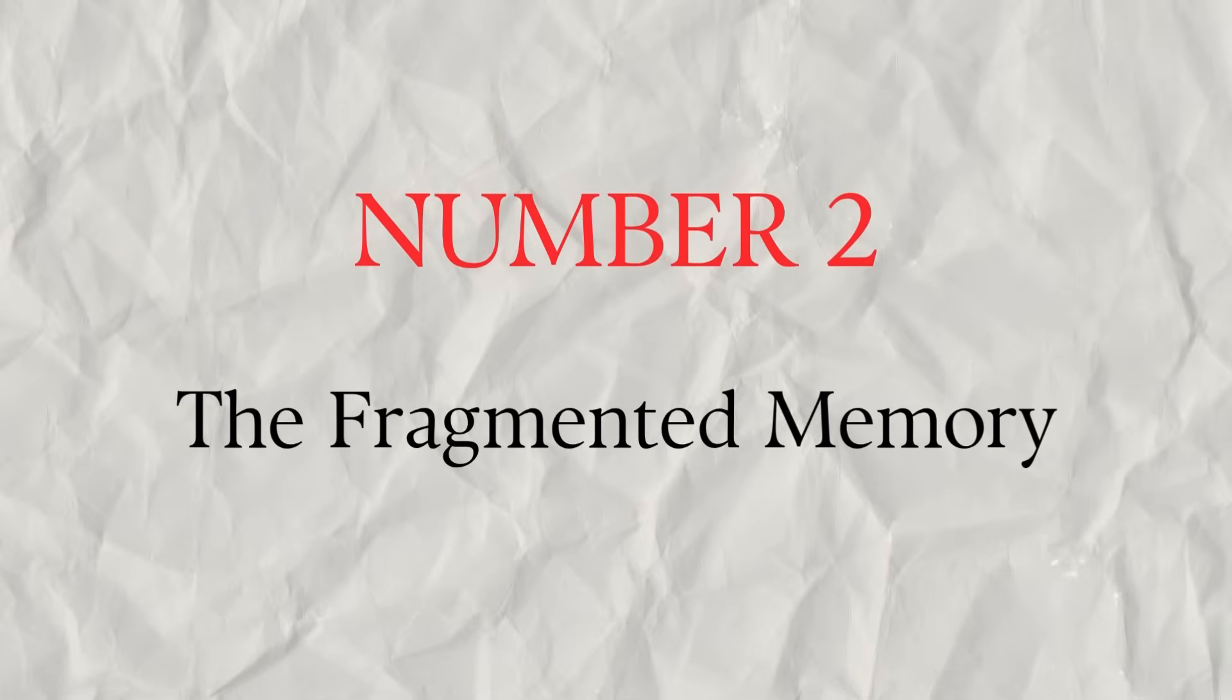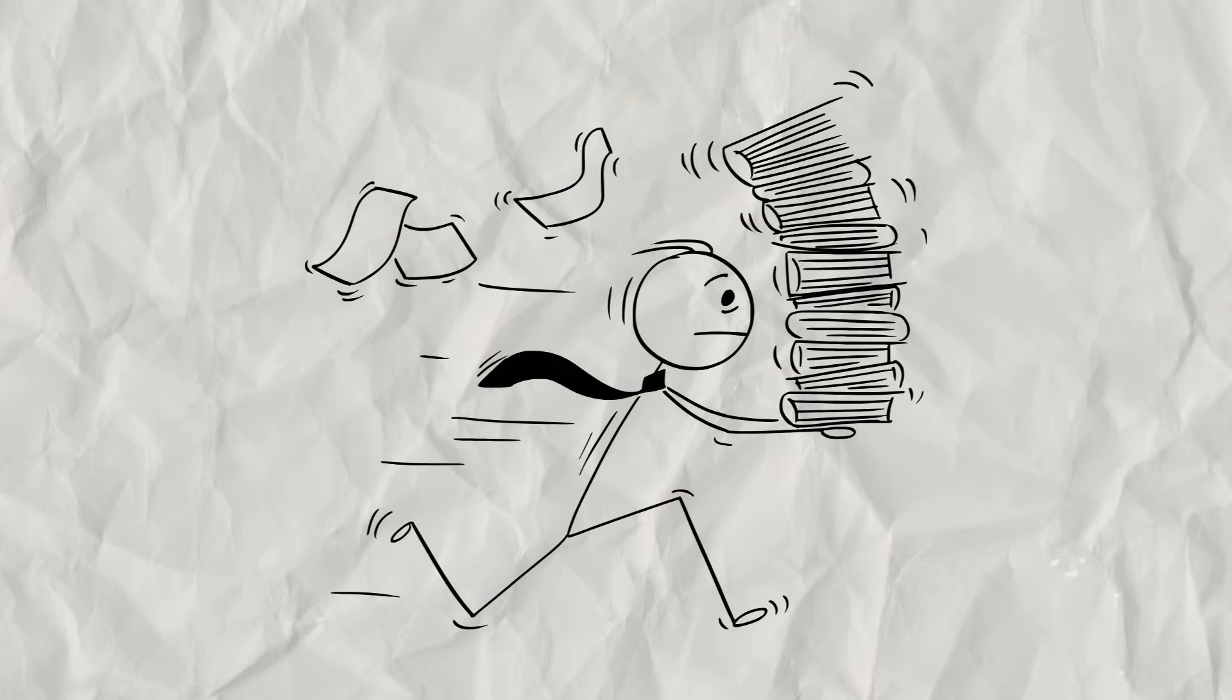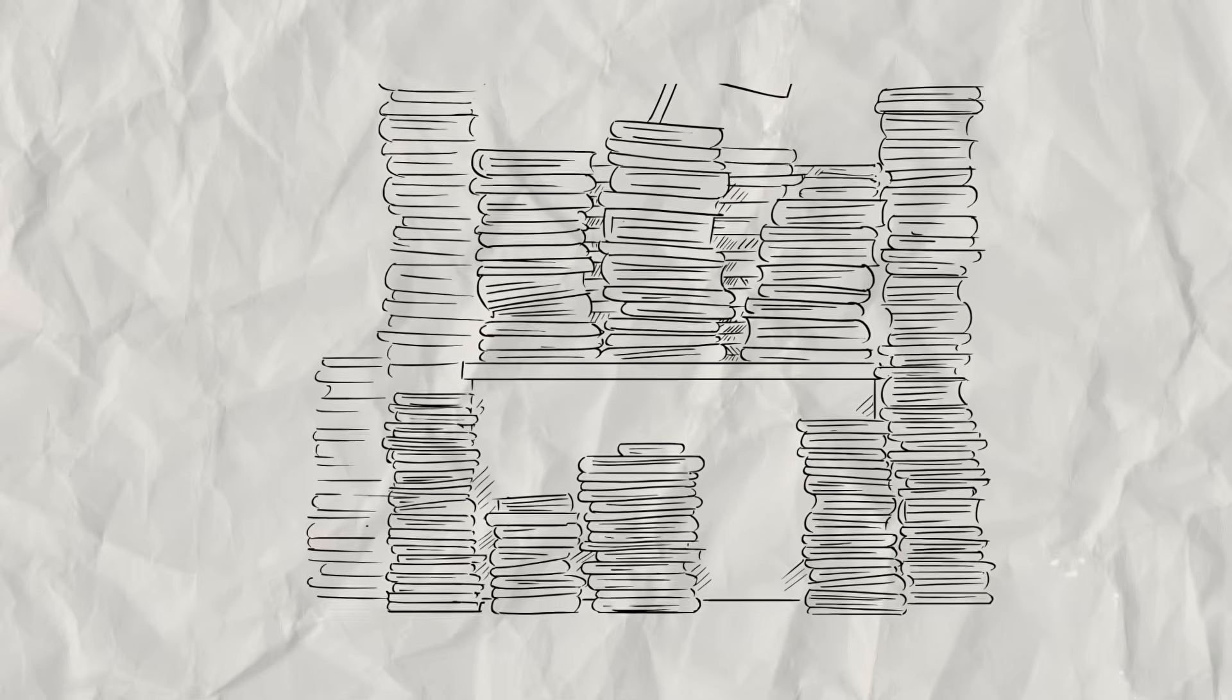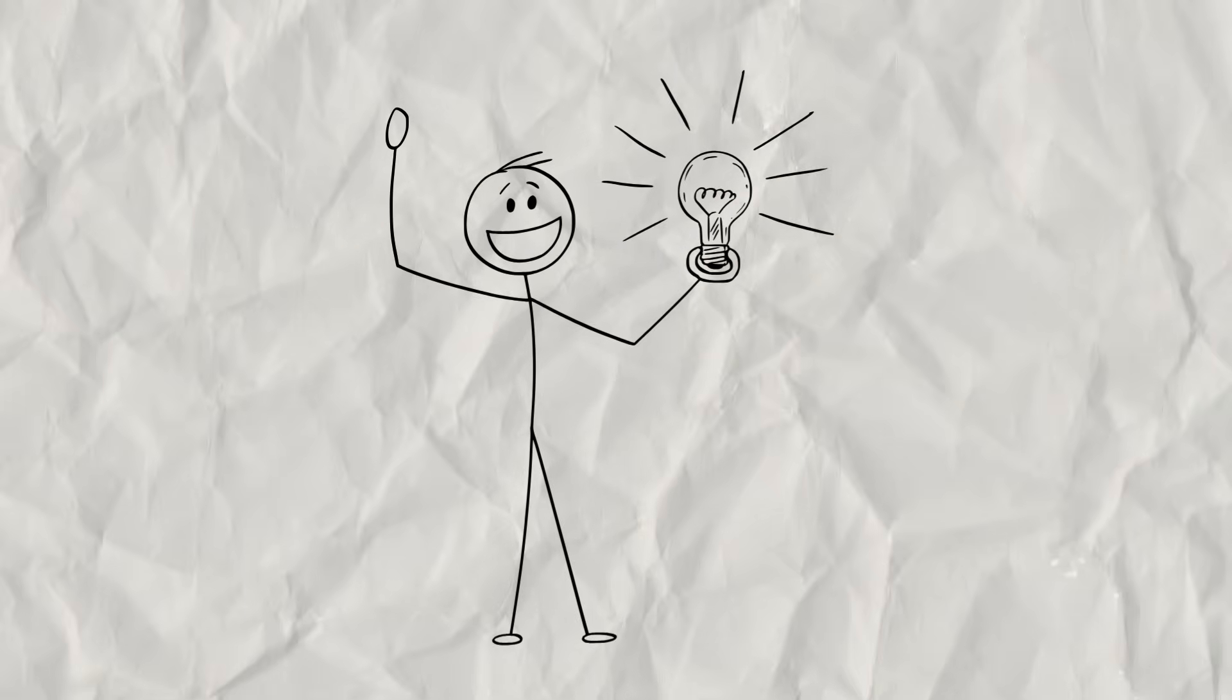The Fragmented Memory. The hippocampus is your brain's librarian. It takes your experiences, catalogs them, and files them away as neat, orderly memories with a beginning, a middle, and an end. It helps you understand that the past is the past.